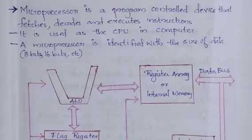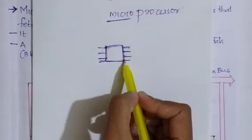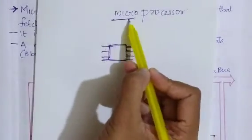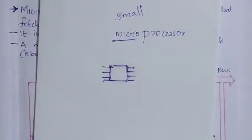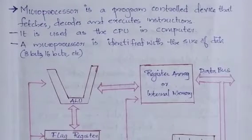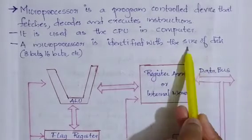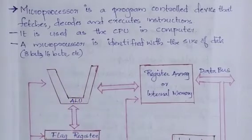Simply put, a microprocessor is a small chip — 'micro' meaning small. A microprocessor is identified using the size of the data, as an 8-bit microprocessor, 16-bit microprocessor, or 32-bit microprocessor.